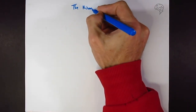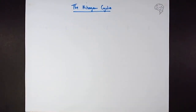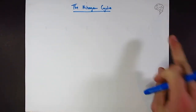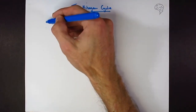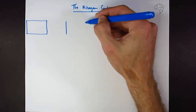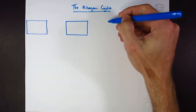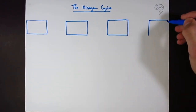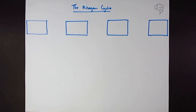This is the nitrogen cycle — universally hated by students, but it's really not as bad as most teachers make it out to be. I'm going to start with a series of four boxes connected by arrows showing the direction of flow. These boxes represent the inorganic forms of nitrogen — meaning not containing carbon — that flow through ecosystems.